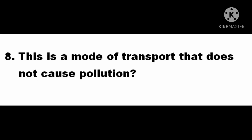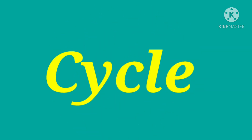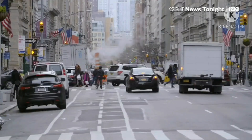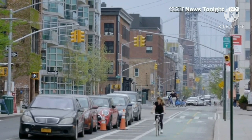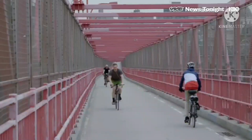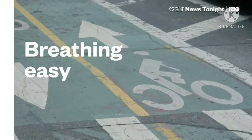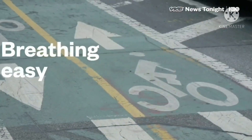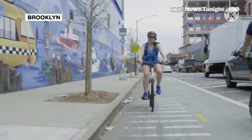Question 8. This is a mode of transport that does not cause pollution. The correct answer is cycle. Air pollution occurs from a variety of sources. Vehicles are just one of them. Each time a person chooses their cycle over their vehicle, it cuts down on the air pollution in our community and town.